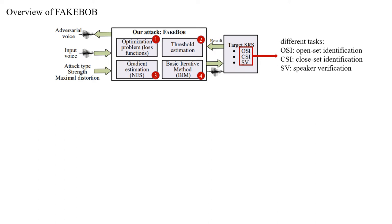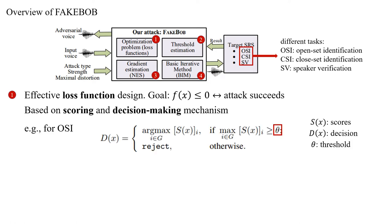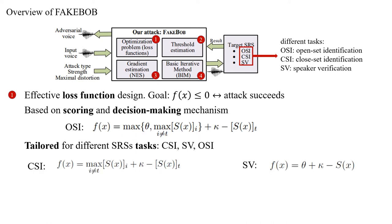This is the overview of our attack Feibok. There are four major components. Firstly, since the generation of adversarial voices is formulated as an optimization problem, the first thing we need to do is to design the loss function. Our goal is that the loss function should be a good indicator of whether the attack succeeds or not. After several tries, we design the loss function based on the scoring and decision-making mechanism of speaker recognition systems. For example, because the open-set identification task makes decisions based on a predefined threshold, we incorporate this threshold into the loss function. Since different tasks have different scoring and decision-making mechanisms, we design different loss functions for different tasks.